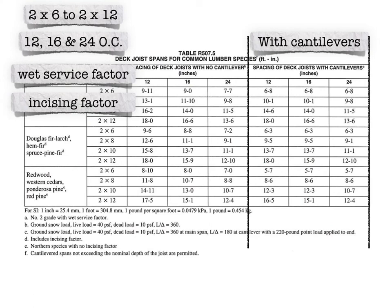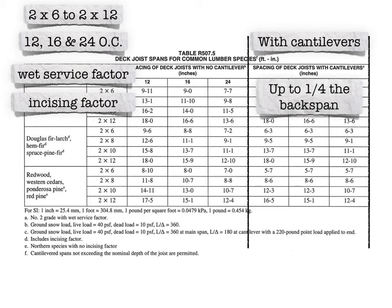However, if anything cantilevers more than that, you have to use the cantilever section of the table, where you'll see many conditions have reduced back spans and reduced maximum spans allowed. Under this part of the table, all joists can cantilever up to one-quarter of the back span. The number in the table provides the maximum back span, and you automatically know from the code language that you can cantilever up to a quarter of what the actual back span comes out to be.